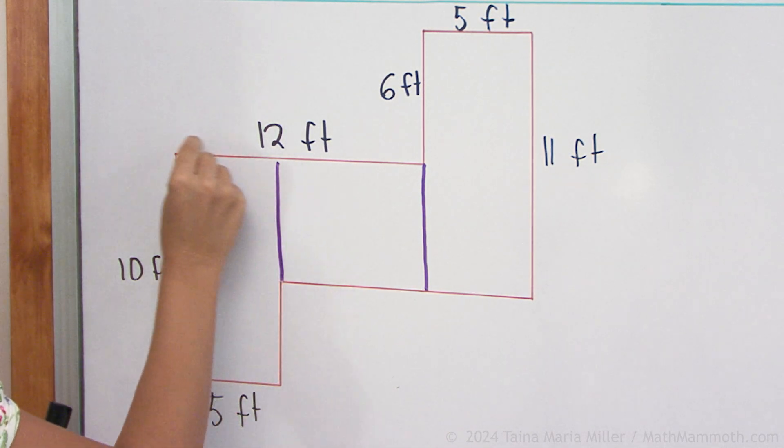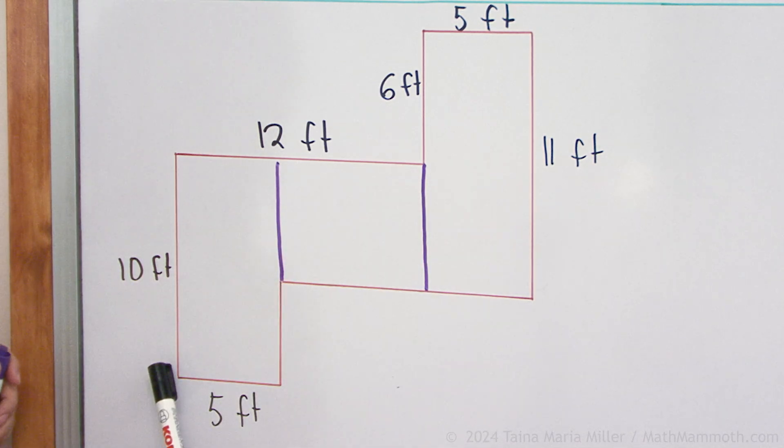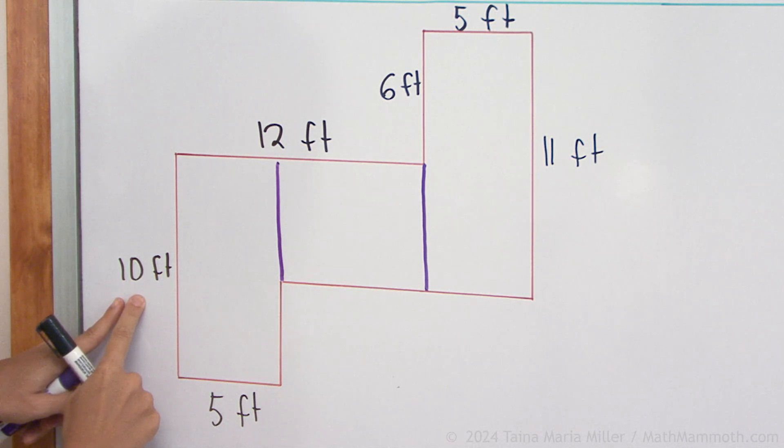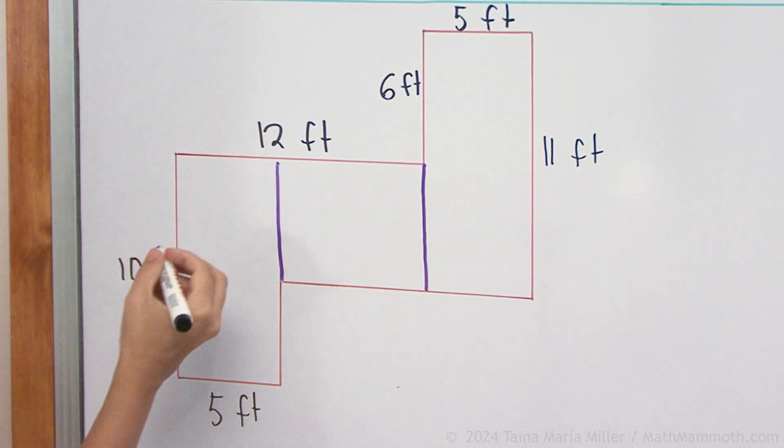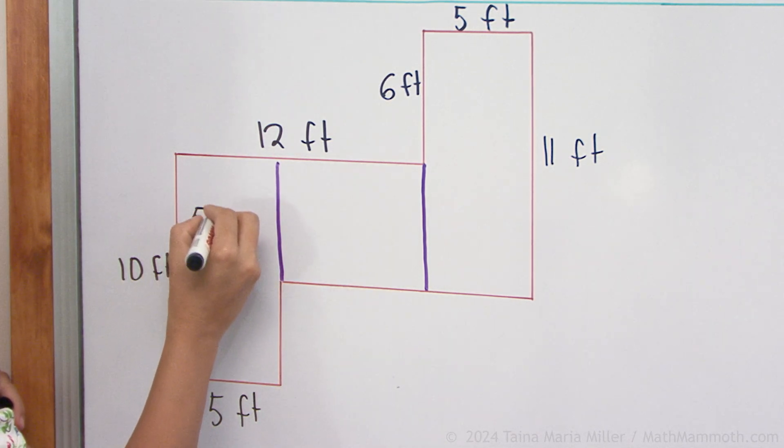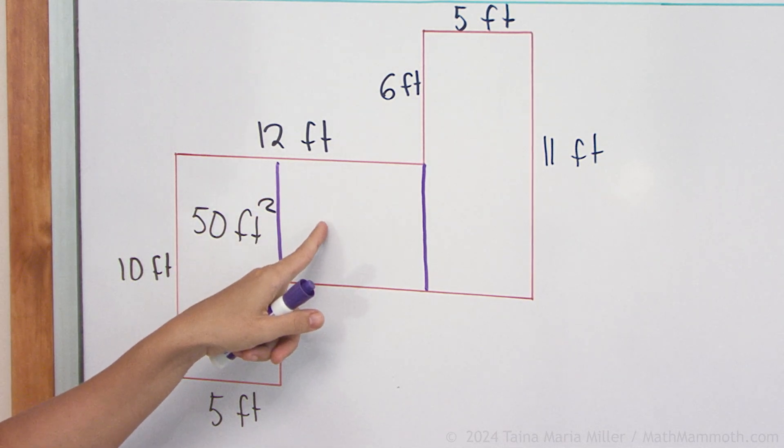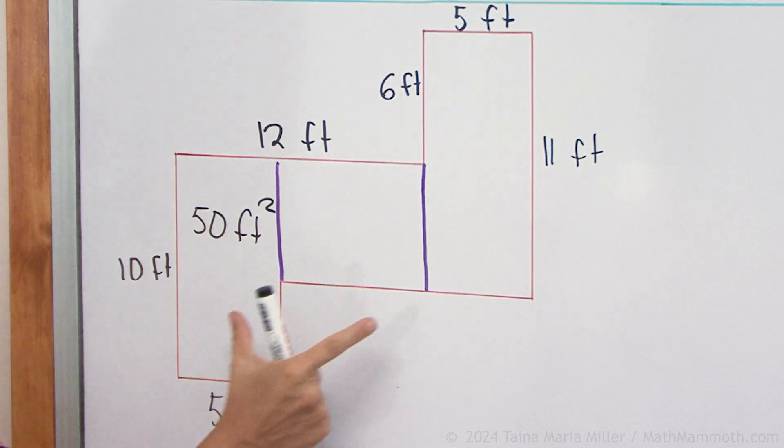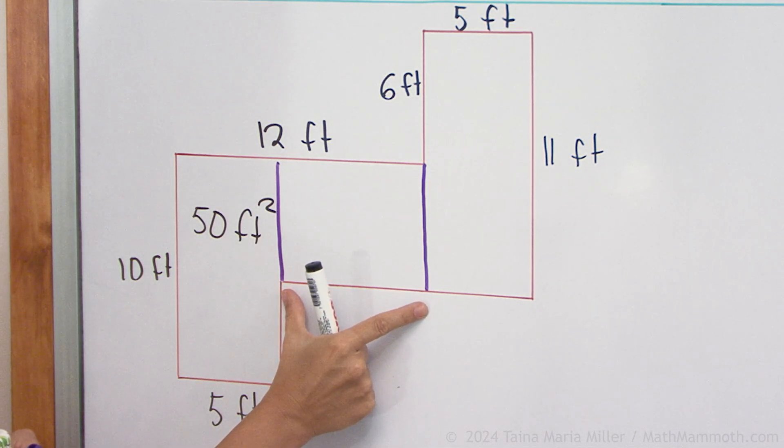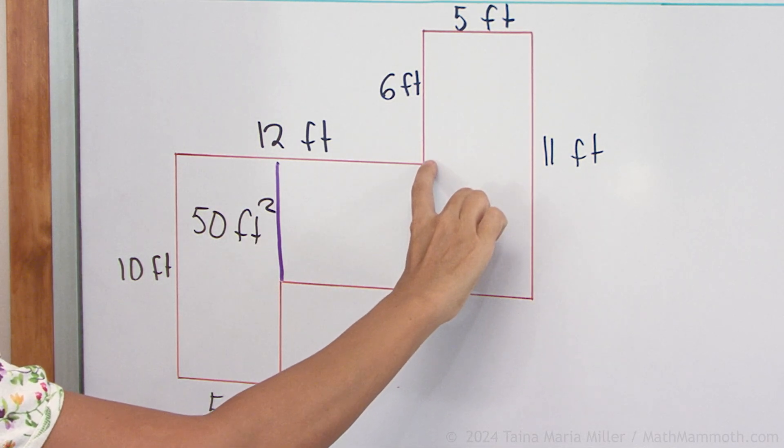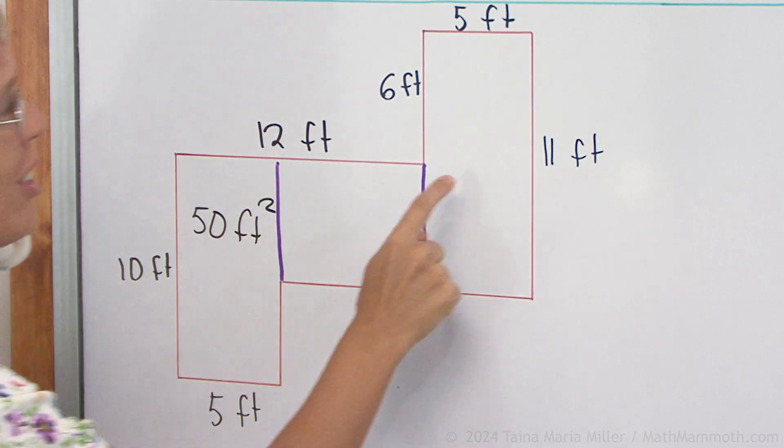And then we figure out the areas of the rectangles. This one here is pretty easy. I can use multiplication. 10 feet times 5 feet. And so the area of this is 50 square feet. How about this rectangle? We don't know this side length. We don't know this one either. So let's go on.